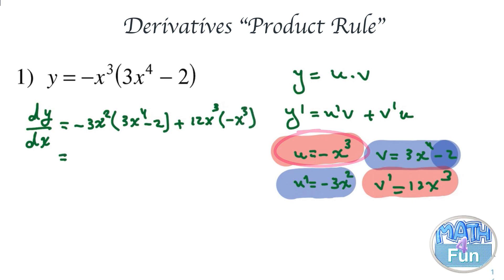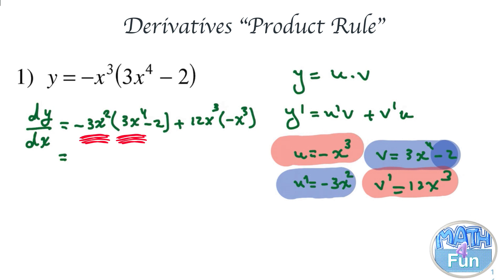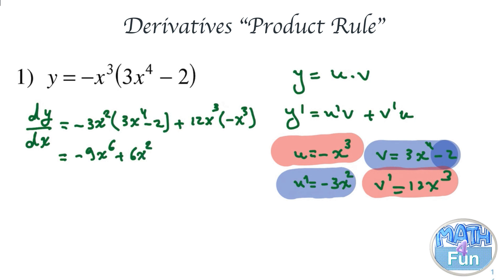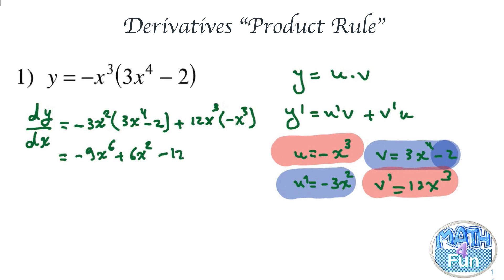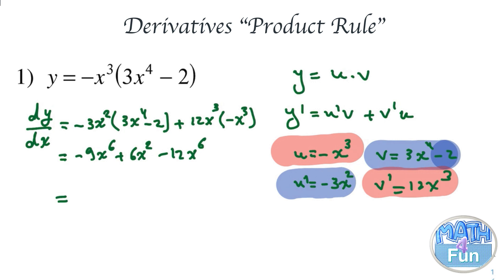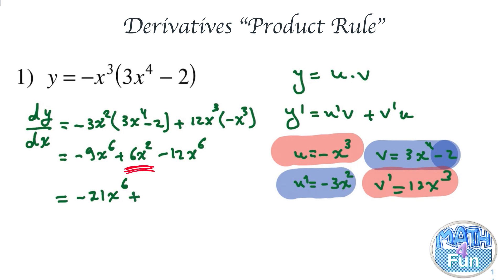Simplifying: minus 3x squared times 3x to the power 4 gives minus 9x to the power 6. Minus 3x squared times minus 2 gives plus 6x squared. And 12x cubed times minus x cubed gives minus 12x to the power 6. Combining like terms: minus 9x⁶ minus 12x⁶ gives minus 21x to the power 6, plus 6x squared. And that's it.